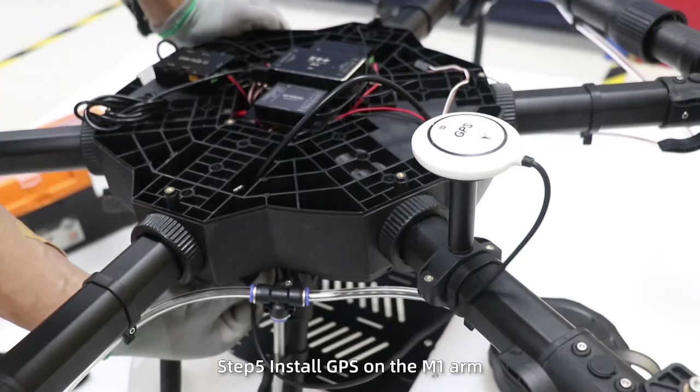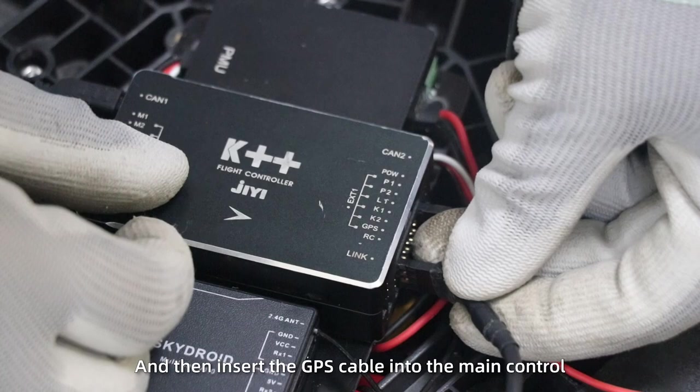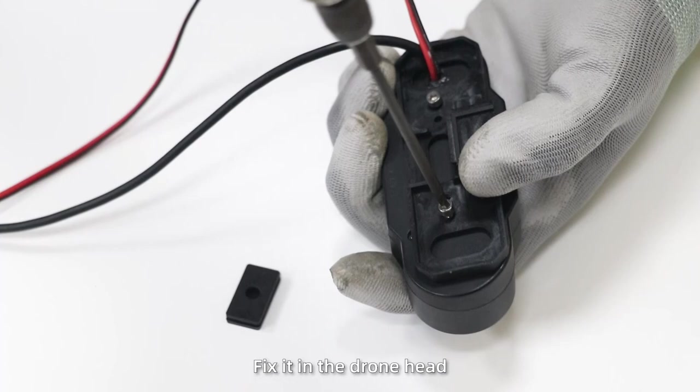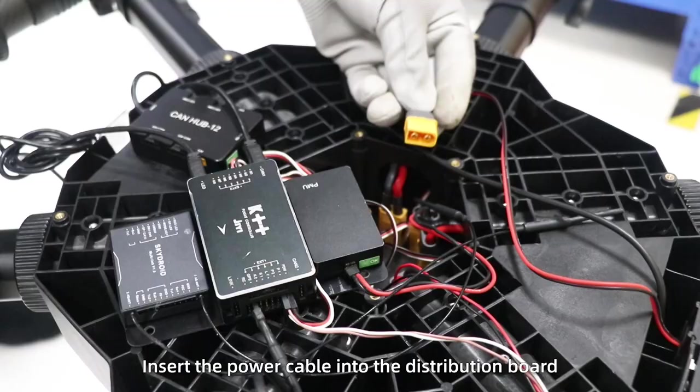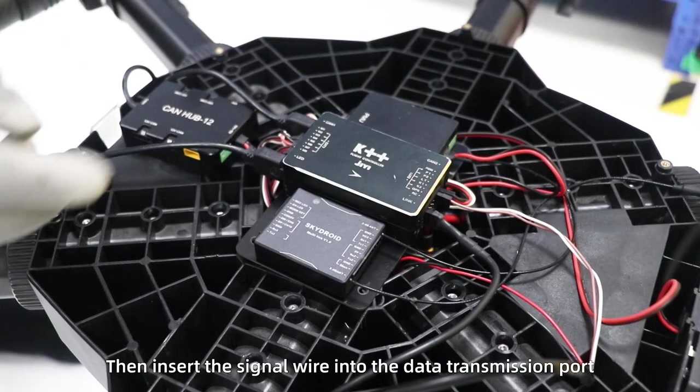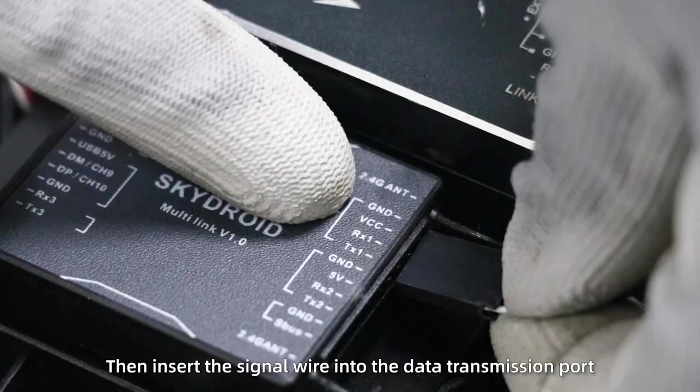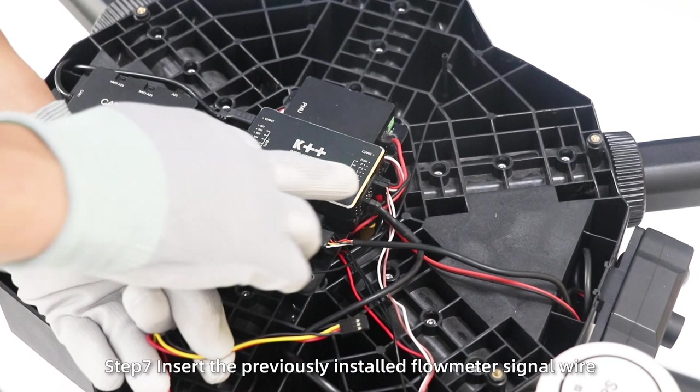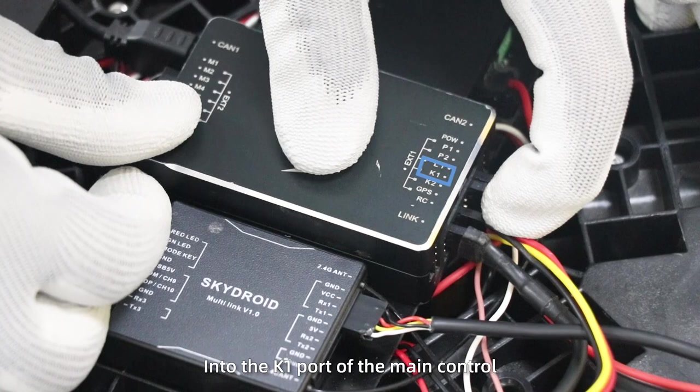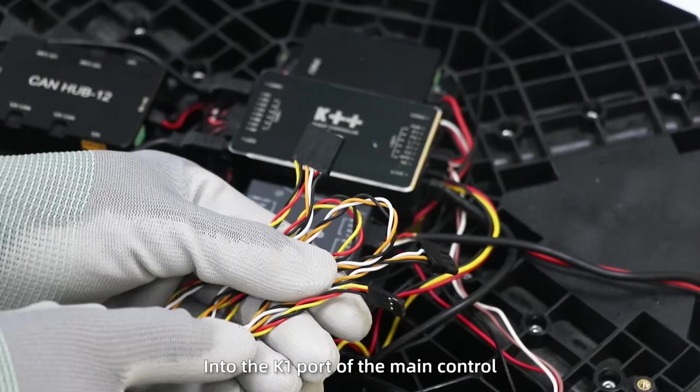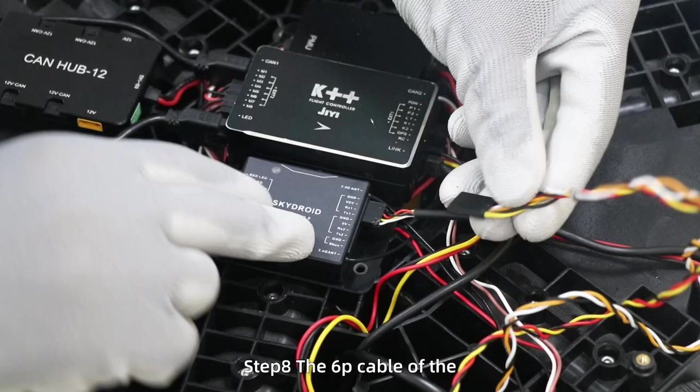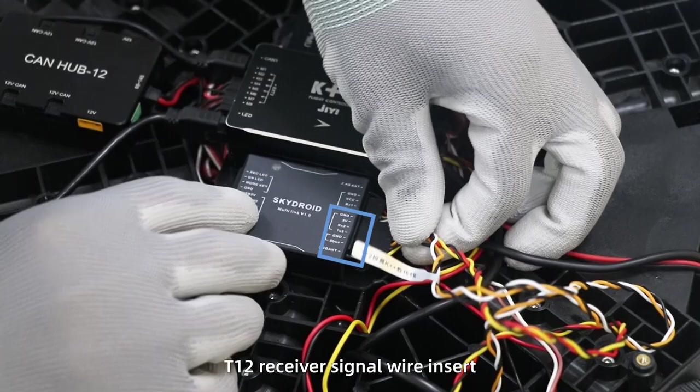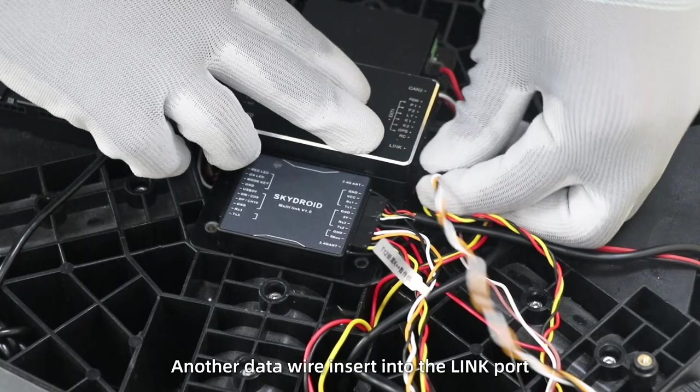Step 5: Install GPS on the M1 arm and then insert the GPS cable into the main control. Step 6: Install the camera. Fix it in the drone head. Insert the power cable into the distribution board, then insert the signal wire into the data transmission port. Step 7: Insert the previously installed flow meter signal wire into the P1 port of the main control. Step 8: The 6P cable of the T12 receiver signal wire insert into the data transmission port. The other end of the SBUS wire insert into the main control RC port. Another data wire insert into the link port.